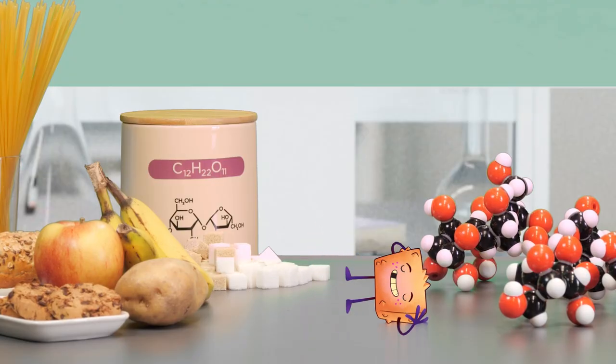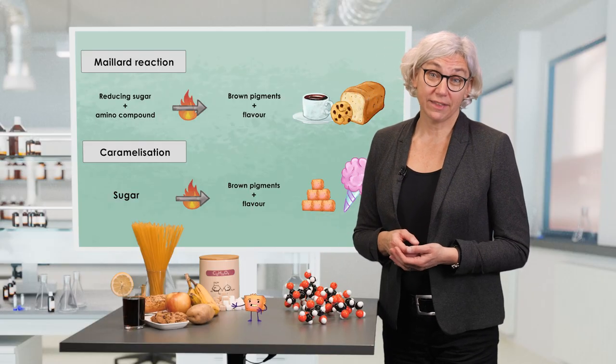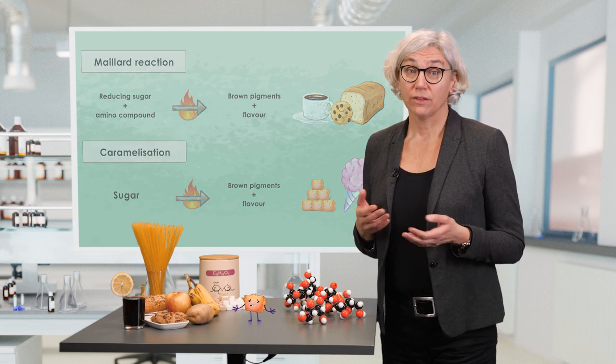When we heat sugar or highly concentrated sugar solutions without the presence of amino compounds to temperatures of higher than 180 degrees centigrade, caramelization takes place, which also leads to the formation of brown pigments and the typical flavor that we are familiar with from cotton candy, butter caramel or fudge. This means that I get a tan, not by lying in the sun, but when I am heated? You're completely right, Asu, but I'm sorry that I have to tell you that your structure is completely destroyed during these reactions.